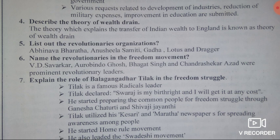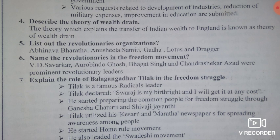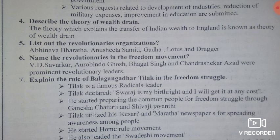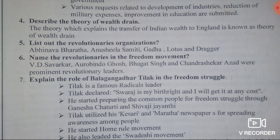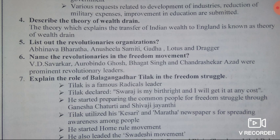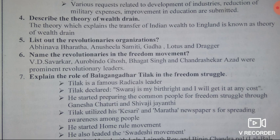Fourth question: describe the theory of wealth drain. The theory which explains the transfer of Indian wealth to England is known as the theory of wealth drain. For the first time, the moderates critically analyzed the ill effects of British rule in India and placed before the people facts and figures about the drain of Indian wealth into England. Dadabhai Naoroji explained about the transfer of Indian wealth to England and it is called the drain theory.